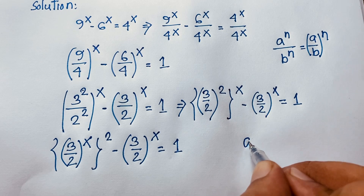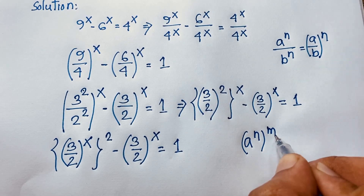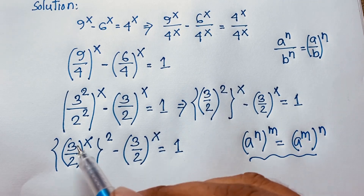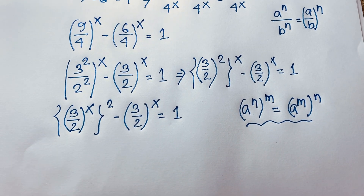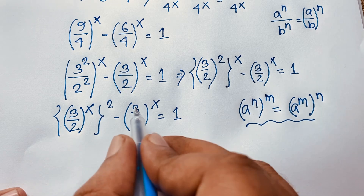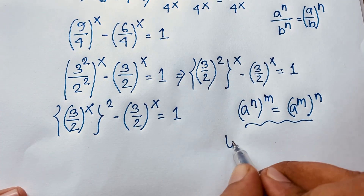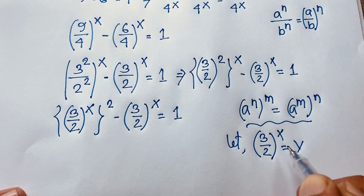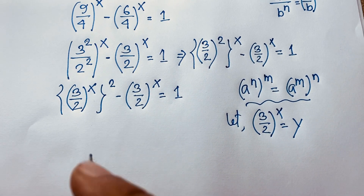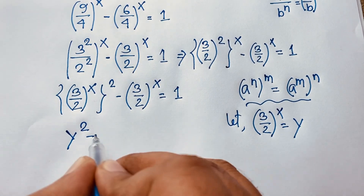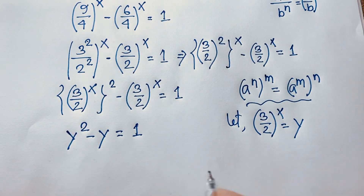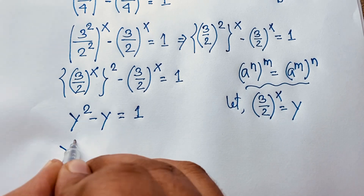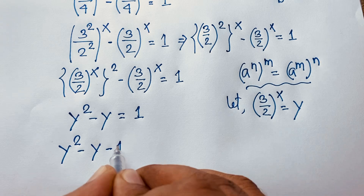We know the exponential law: (a^m)^n = a^(mn). Both terms share the base (3/2)^x, so let y equal (3/2) to the power x. Substituting, the expression becomes y squared minus y equals 1, which gives us the quadratic equation y squared minus y minus 1 equals 0.